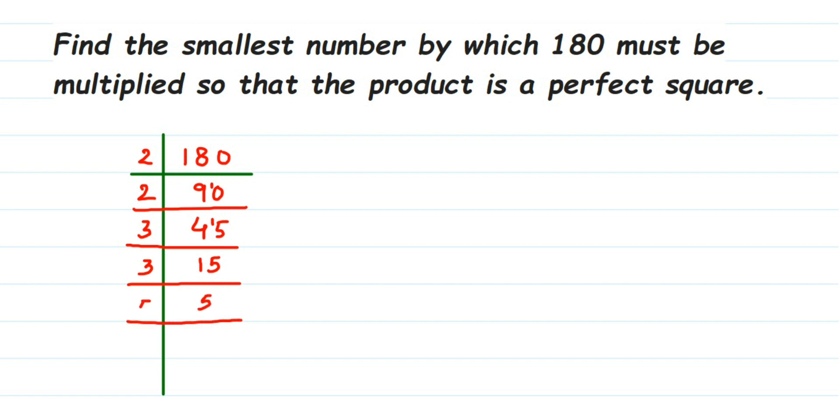Now we're going to rewrite this once again. So 180 equals—write down all these factors that you got—it is 2 times 2 times 3 times 3 times 5.